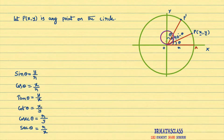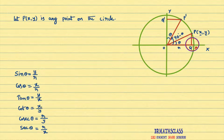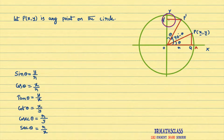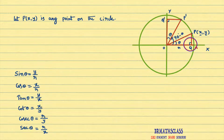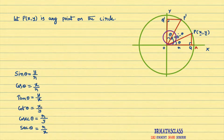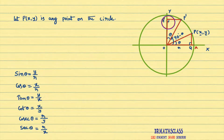Please understand: ray OP' makes an angle 90° - θ with the x-axis. Now observe this diagram. PQ is perpendicular to the x-axis, and P'Q' is perpendicular to the y-axis. Observe these two triangles: triangle OPQ and triangle OP'Q'. This angle is θ, this angle is 90°, and here this angle is also 90°.